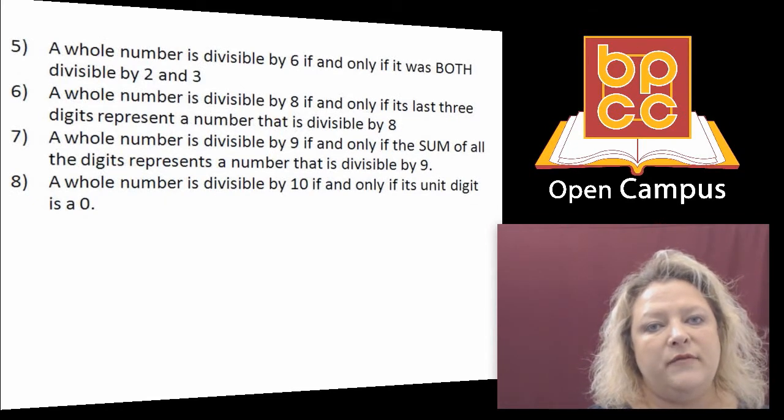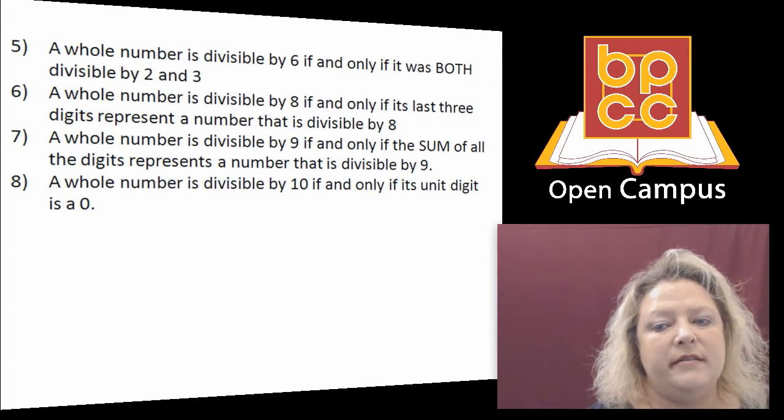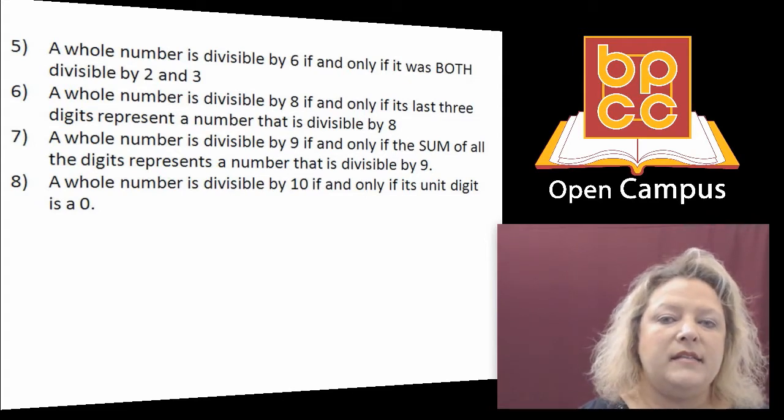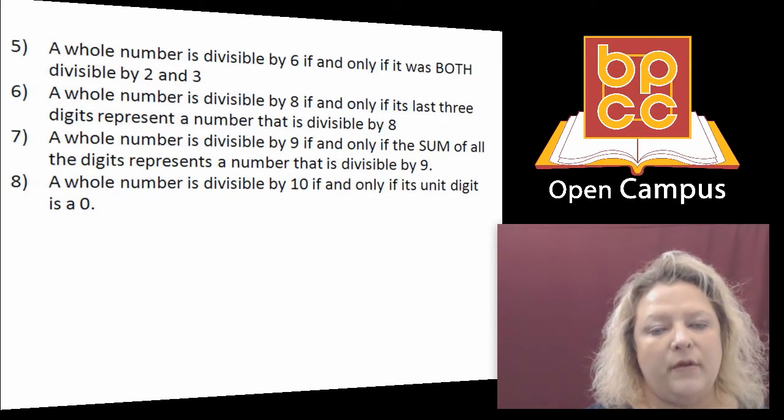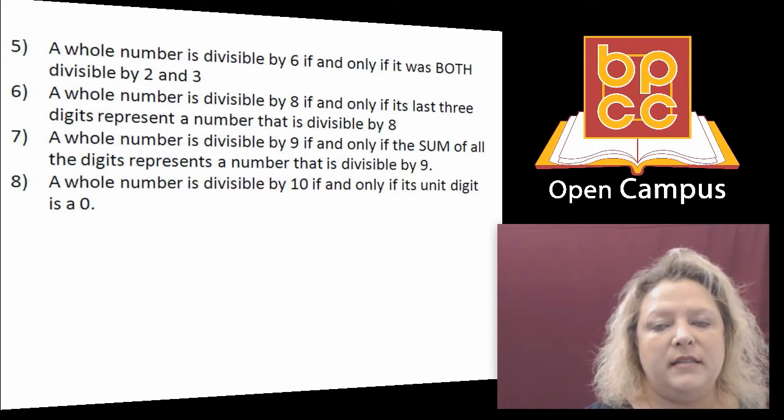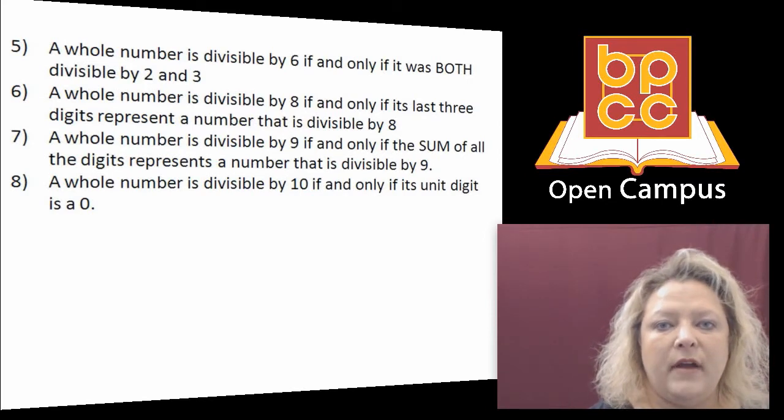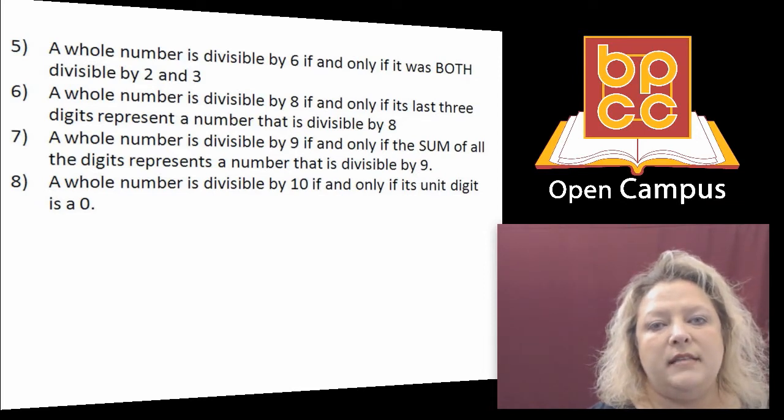6 works if 2 and 3 divide into it because 2 times 3 is 6. 8 is similar to 4. If the last three digits of a number, it would have to be a big number, but if 8 divides into those last three digits, it will divide into the whole number. 9 is just like 3. If you add all the digits and you can divide by 9, then you can divide the whole thing by 9. And 10 is one of the easiest. If it ends in 0, 10 divides into it.